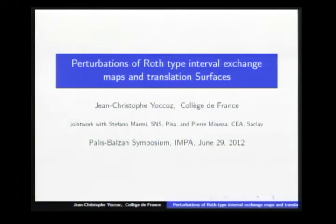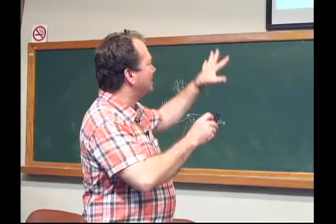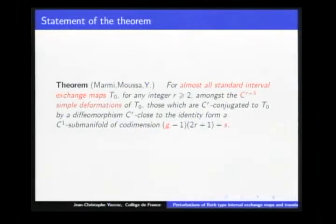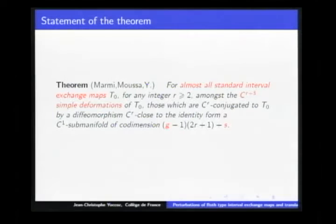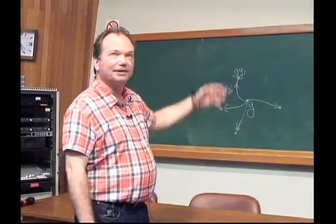I will talk about a result which is not quite new. The first version is about two years old. The first part of the talk will be about explaining what it means — the words in red will be explained — in order to have a precise mathematical statement. After giving a short idea of the proof, what I would like is really to discuss what comes beyond that: open questions and work in progress. The last part of the talk will be on comments and questions regarding this theorem.